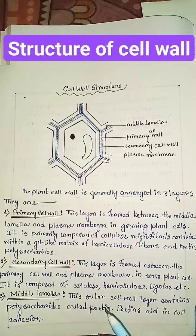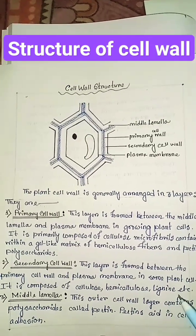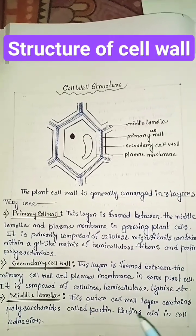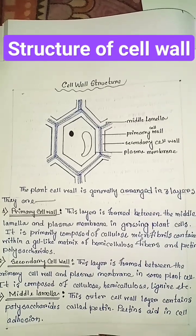Middle lamella. This outer cell wall layer contains polysaccharides called pectin. Pectin aids in cell adhesion.